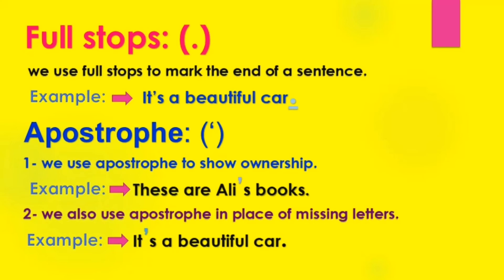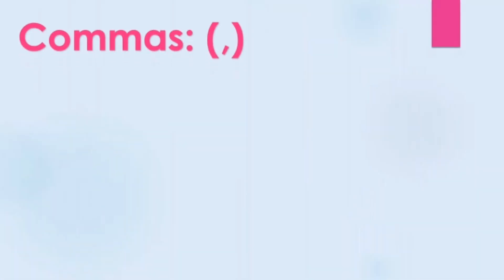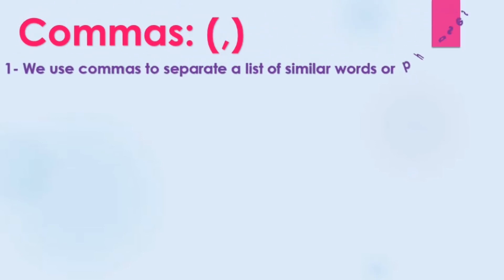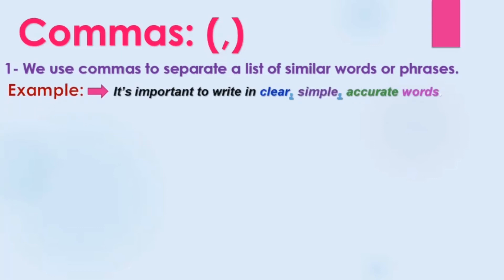Okay guys, now let's move to commas. We use commas to separate a list of similar words or phrases — نستخدم الفاصلة لفصل قائمة من الكلمات والعبارات المتشابهة. For example: 'It's important to write in clear, simple, accurate words.' Here we have three adjectives: clear, simple, accurate.